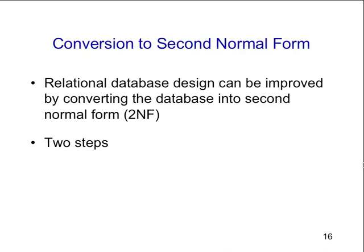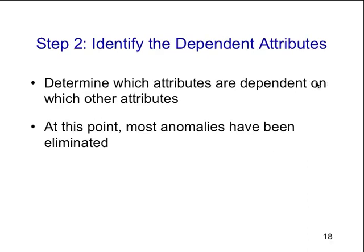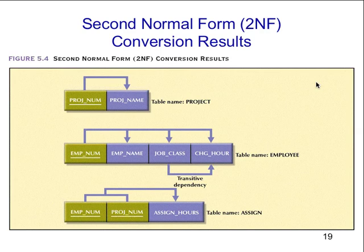Let's convert it to second normal form. The relational database design can be improved by converting to second normal form — there are two steps. Step one: identify all of the key components. Write each key component on a separate line, write the original composite key on the last line, and each component will become the key in the new table. Then identify the dependent attributes associated with each key, determine which attributes are dependent on other attributes, and at this point most of the redundancies have been eliminated.